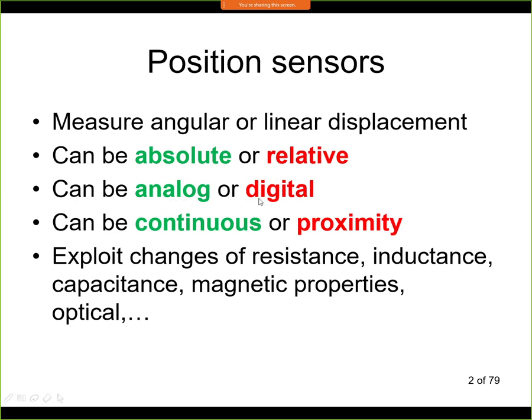The third grouping is analog or digital sensors, and this does not apply only to the output signal. Even if the sensor is digital, it may have an analog output signal. This grouping is based on the principle of the sensor. Some sensors will have essentially infinite resolution — we call them analog sensors — and some sensors in principle will have a finite resolution — we call them digital. All sensors that we will see today will be both analog sensors and absolute sensors.